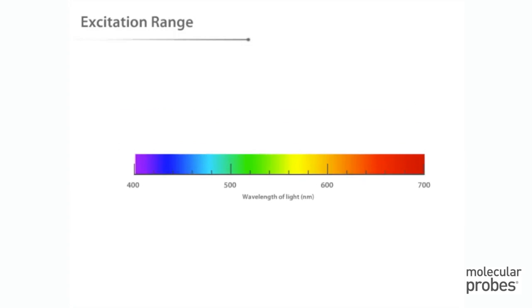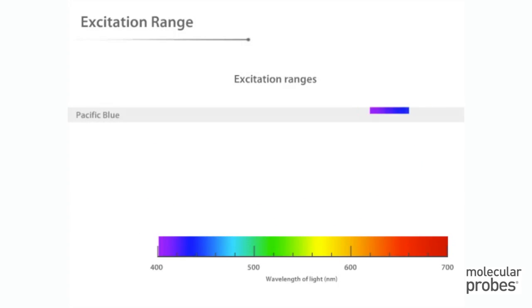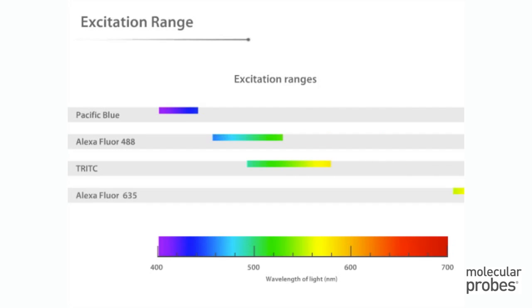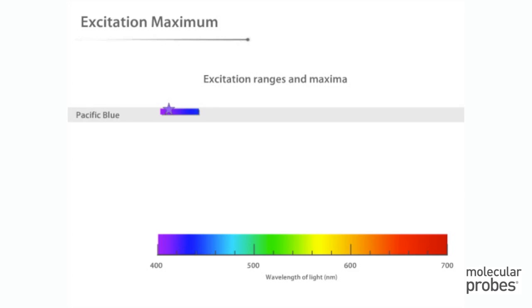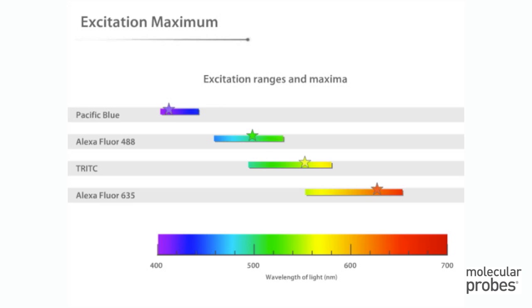A fluorescent dye absorbs light over a range of wavelengths, and every dye has a characteristic excitation range. However, some wavelengths within that range are more effective for excitation than other wavelengths. This range of wavelengths reflects the range of possible excited states that the fluorophore can achieve. So for each fluorescent dye, there is a specific wavelength, the excitation maximum, that most effectively induces fluorescence.